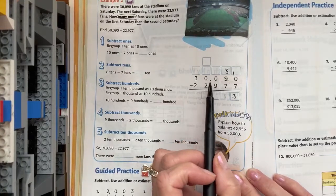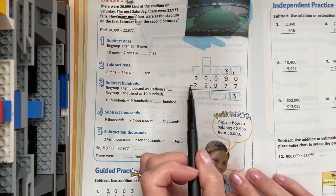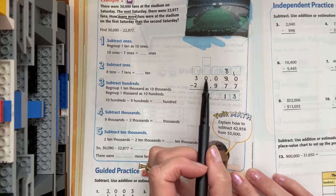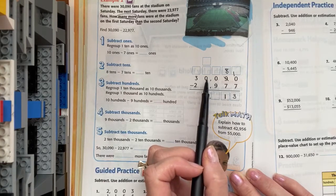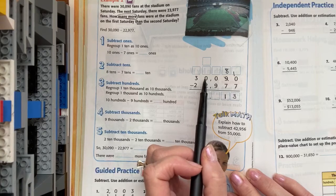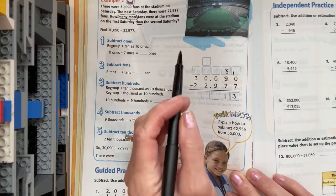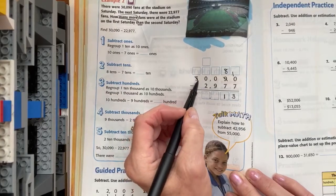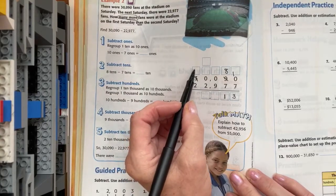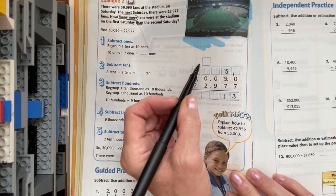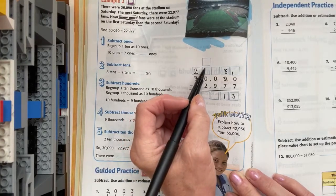Moving to the hundreds. I have no groups of a hundred, and I'm supposed to take away nine groups of a hundred. So, we're going to have to go next door, and take a group of a thousand. But, oh look, I don't have a group of a thousand. I'm going to have to go all the way to the ten thousand. So, I'm going to cross out the three, and record that I'm leaving two groups of ten thousand there, and I'm going to put that group here.